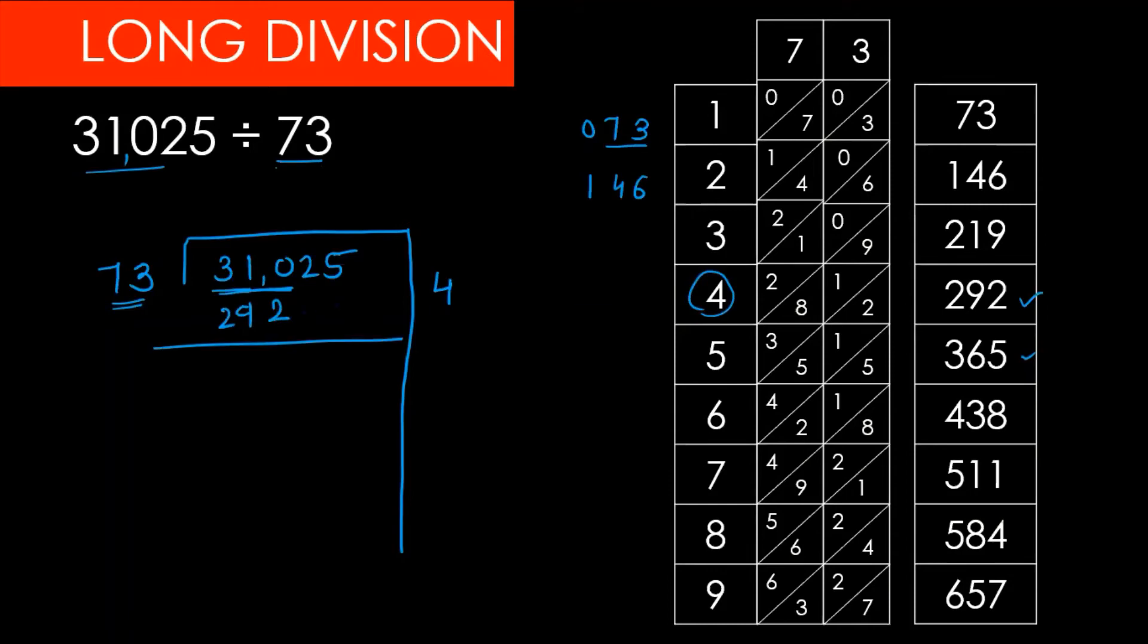We have 292. We will subtract these two numbers. So 5 minus 0 equals 5, 2 minus 0 equals 2, here will be 10 and 0, 10 minus 2 equals 8, 30 minus 21 gives us 182.